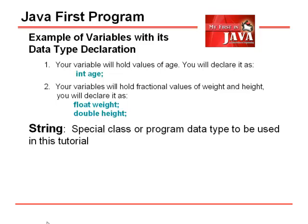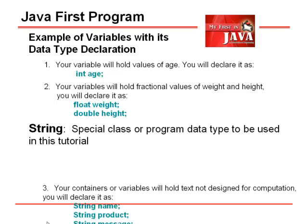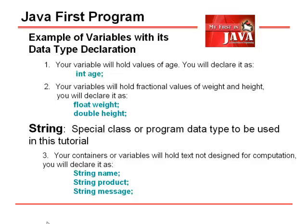We will also use a special class or program data type called String. If your variable is not designed for computational purposes and will normally hold messages or a combination of text and numbers, we declare the variable name with a String data type. Examples are: String name, String product, and String message.